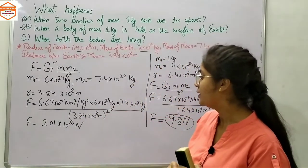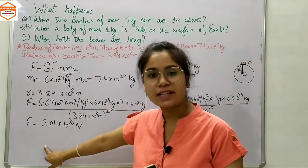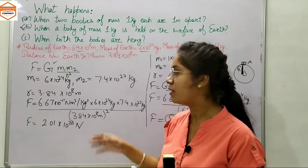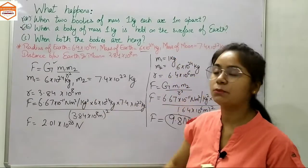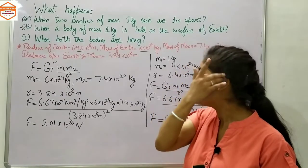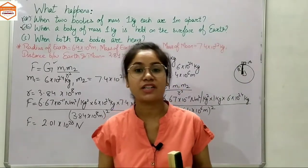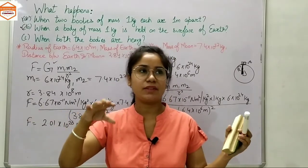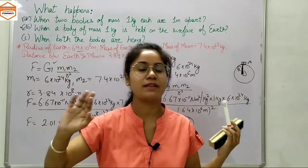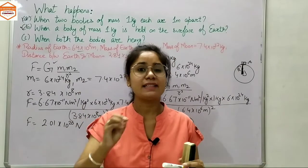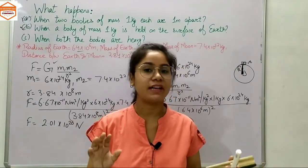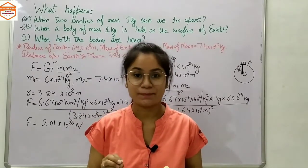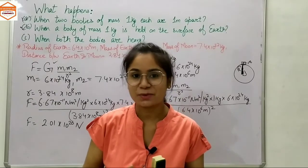This is a huge gravitational force of attraction between the Earth and Moon — the two heavy objects. This force is what makes the Moon revolve around Earth. You can also find the gravitational force of attraction between the Sun and Earth, Jupiter and Earth, Pluto and Sun, or any other planets, provided you have the correct distance data — for both celestial and terrestrial objects.